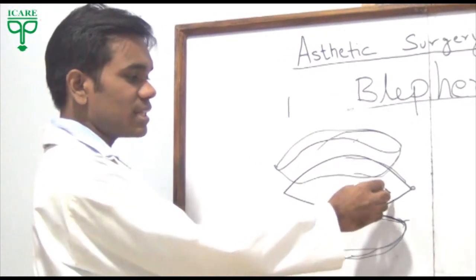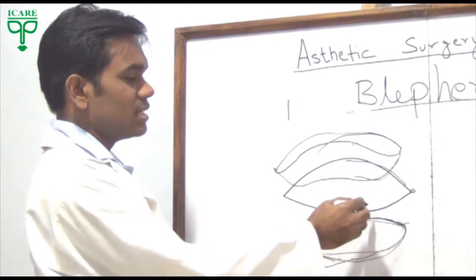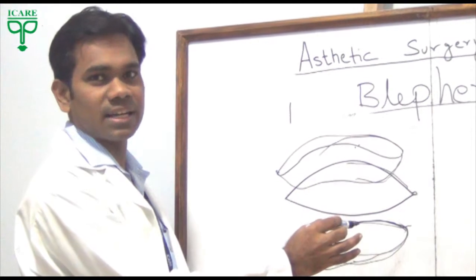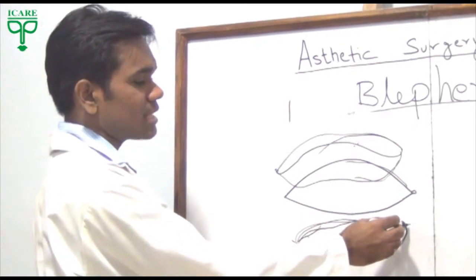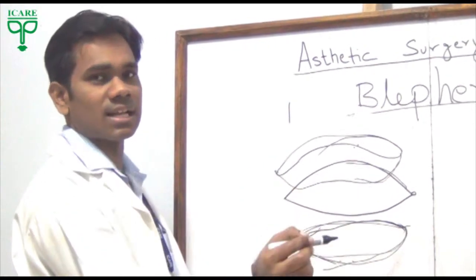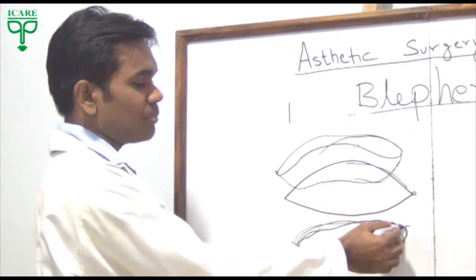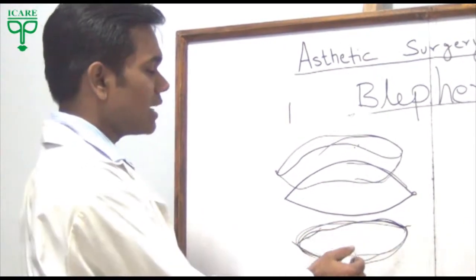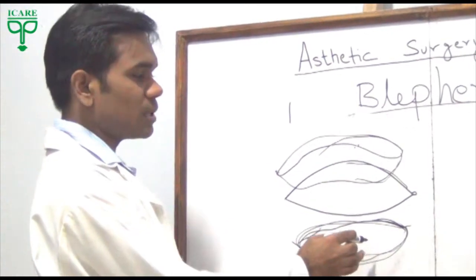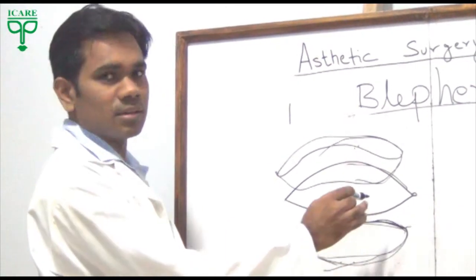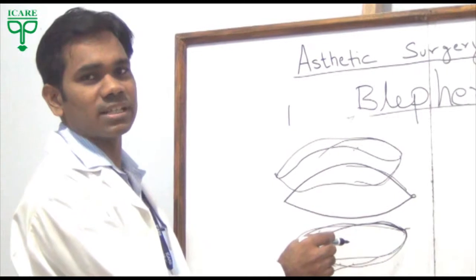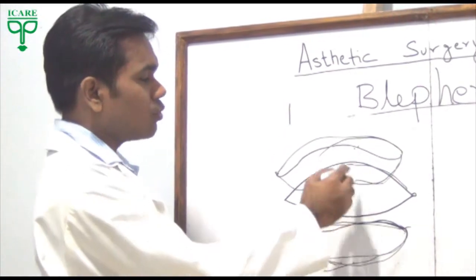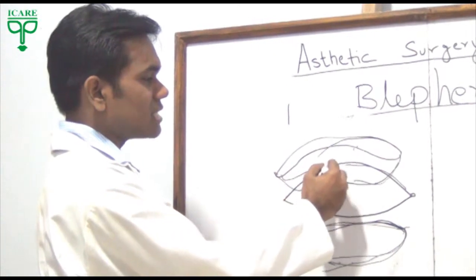After surgery, the total result becomes suitable for patients. What happens during the patient's surgery is very important. These are the two types of surgery: upper blepharoplasty and lower blepharoplasty.